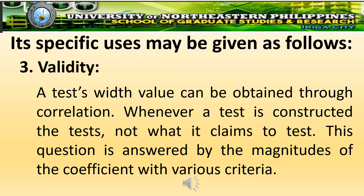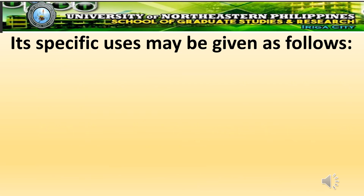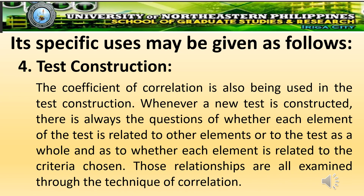Third, validity. A test's validity can be obtained through correlation. Whenever a test is constructed, the question of whether the test measures what it claims to test is answered by the magnitude of the coefficient with various criteria. Fourth, test construction. The coefficient of correlation is also being used in test construction. Whenever a new test is constructed, there is always the question of whether each element of the test is related to other elements or to the test as a whole, and whether each element is related to the criteria chosen. Those relationships are all examined through the technique of correlation.